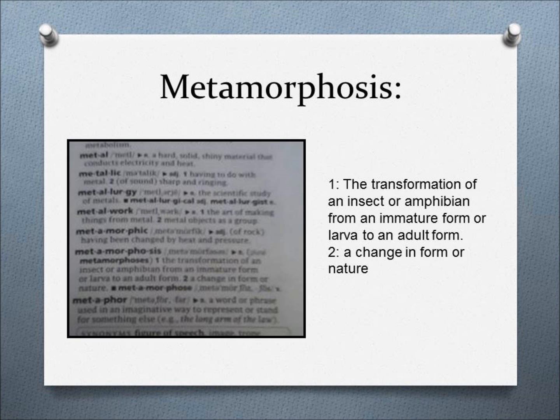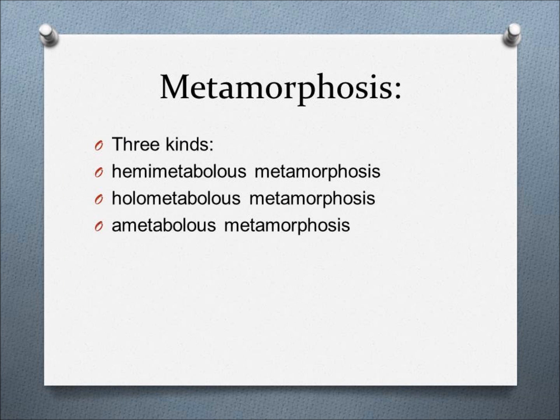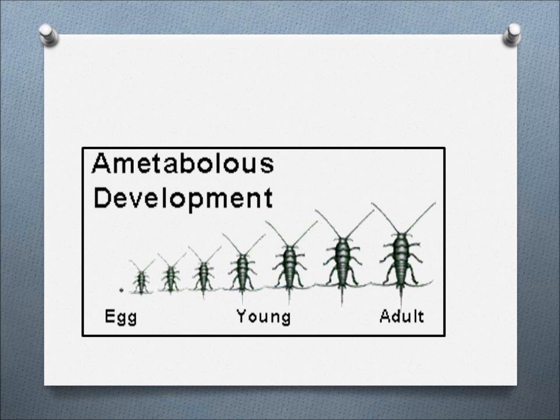Let's start with life cycles. All insects go through metamorphosis. Metamorphosis is defined in two ways: the transformation of an insect or amphibian from an immature form to an adult form, or it could mean a change in form or nature. Insect metamorphosis can be further classified into hemimetabolous metamorphosis, or incomplete metamorphosis; holometabolous metamorphosis, or complete metamorphosis; and ametabolous metamorphosis, meaning that there is practically no change in form at all.